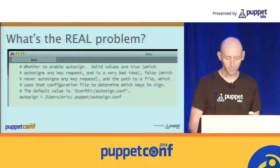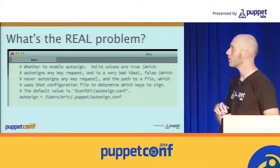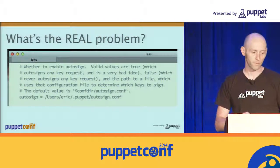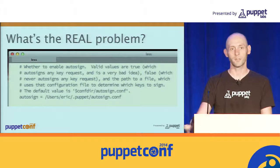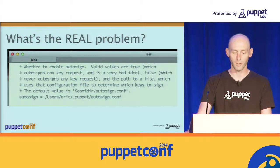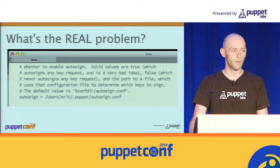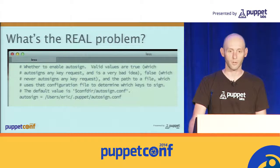So the question of how you trust a new signing certificate request comes into play. The real problem is described in this comment from Puppet 3.2: whether we're going to enable autosign. Valid values are: true — you autosign anything, which is a very bad idea; false — never autosign, which is how Puppet Enterprise ships and requires manual intervention; or a path to a file — the autosign.conf — which was previously the only way to have some automation that wasn't all the way yes or all the way no about which hosts get certificates.